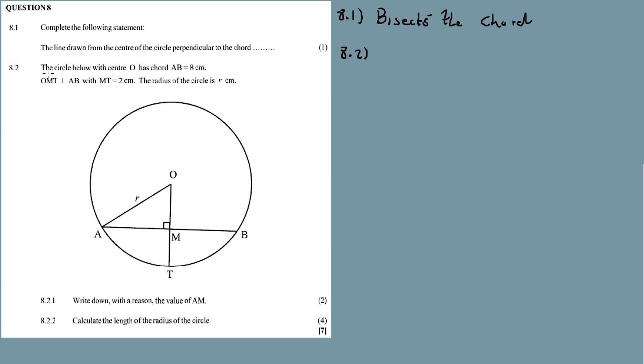8.2: The circle below with center O has a chord AB which is equal to 8 centimeters. So from A to B, it's 8 centimeters. OMT is perpendicular to line AB with MT equal to 2 centimeters. The radius of the circle is R.